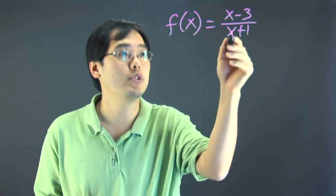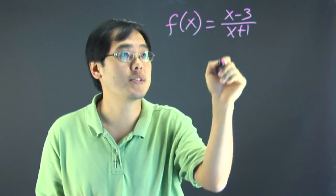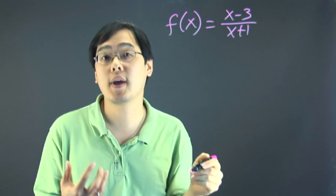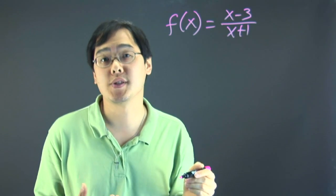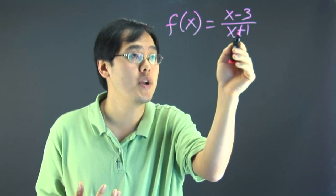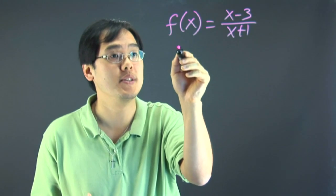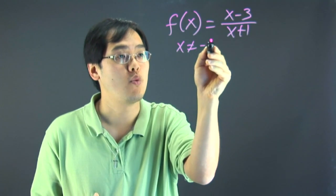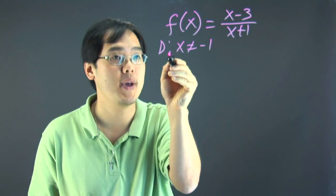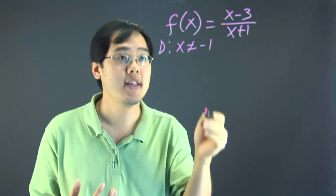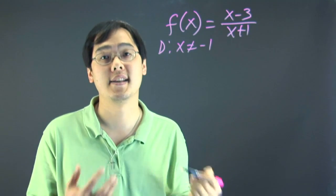So for example looking at this, since this is a fraction expression, you want to think about okay well the denominator cannot be zero. That's where it's undefined. So looking at this the one number that x cannot equal to is negative one. So right off the bat you want to establish that the domain is x cannot equal to negative one. That means it will never qualify as an intercept.